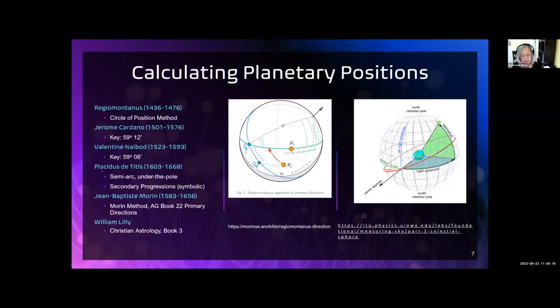The Regiomontanus and Placidus techniques for computing primary directions are the ones most used. At a high level, the graphics show the difference between the Regiomontanus and Placidus methods. Both are ways to find planetary positions relative to one another. They generally give similar results, although Regiomontanus's system is somewhat more of an approximation, and the Placidus system is a bit more exact.